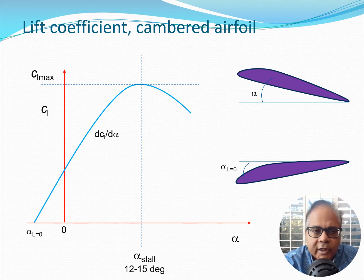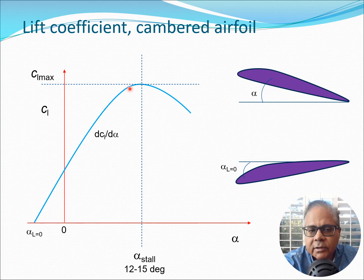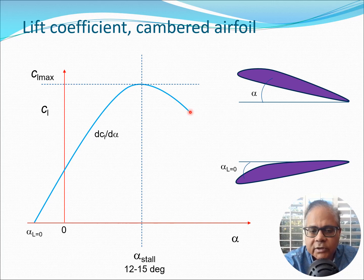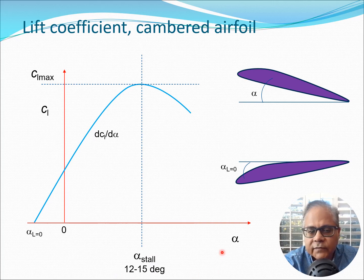So when we do these tests, what do we obtain? Let's start with the lift coefficient for a typical cambered airfoil. The CL versus alpha curve has a linear region up to a point, and then CL starts going down — the lift starts decreasing. This point where lift starts going down is essentially related to stall, which is related to flow separation. The alpha stall value could be something like 12 to 15 degrees for many airfoil cross sections.